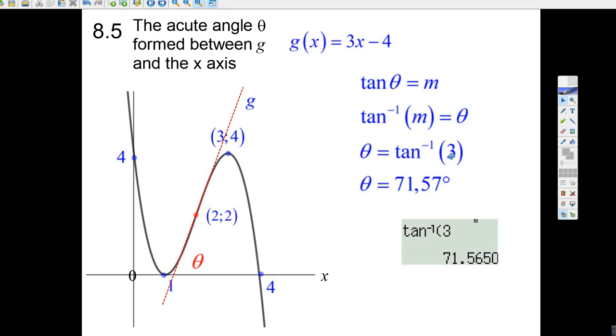So shift tan of 3 gives me 71.57 degrees. Look, I did it. Shift tan of 3, 71.5, and I rounded it up to 57 degrees.